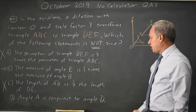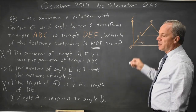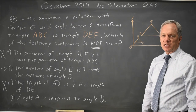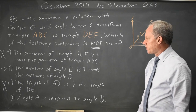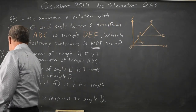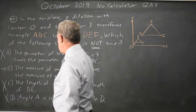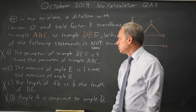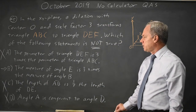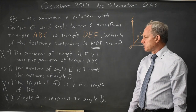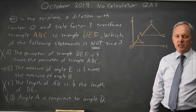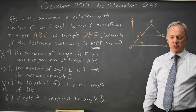In choice D, angle A is congruent to angle D. A and D are corresponding angles in similar triangles — they are in fact congruent. So we're looking for something that's not true, and D is true, so that is not the correct answer. We're looking for choice B, which says that angle E is three times angle B — and of course the angles are equal.